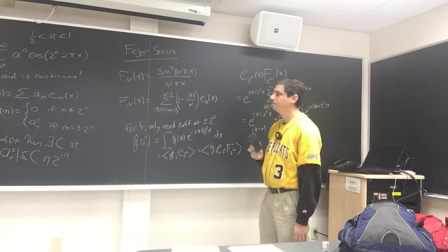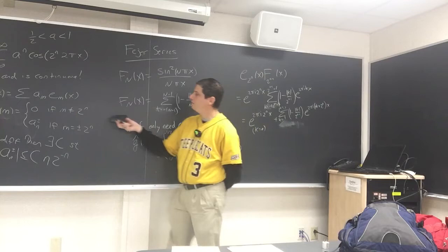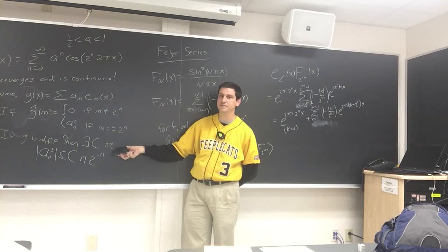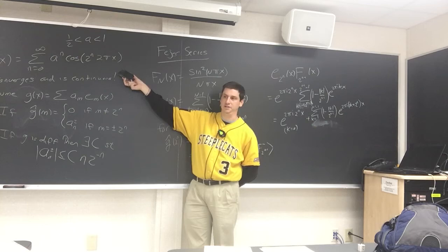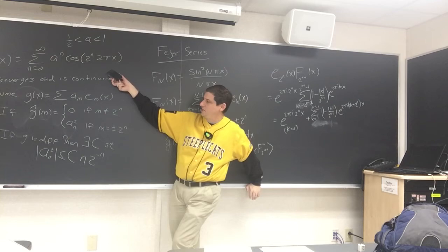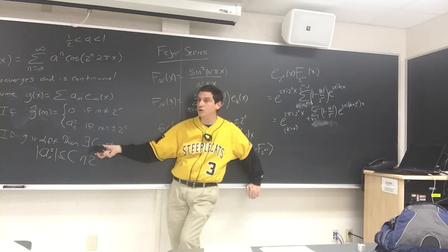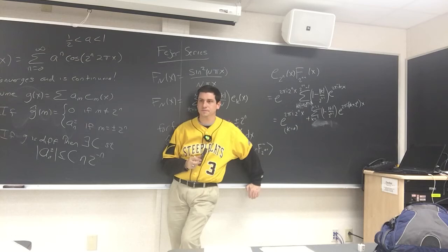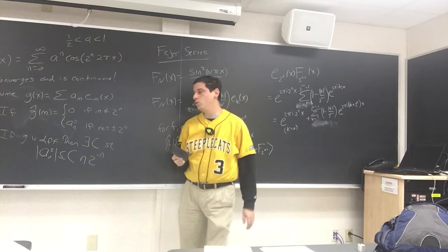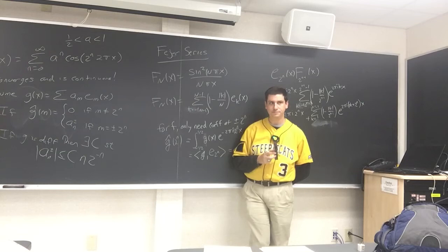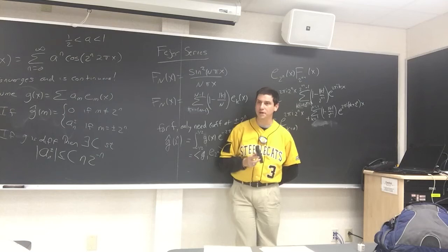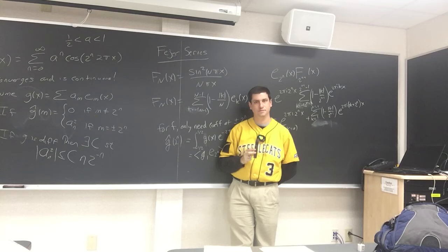You might ask: haven't we shown yet that g has coefficients only at powers of 2? Yes — we're working with a general function g that only has coefficients at ±2^n. If that's true, then those coefficients must have this decay rate, and since our a is too large, we get a contradiction immediately. We've reduced the problem to showing that if a function's Fourier coefficients only live at powers of 2 and the function is differentiable, then the coefficients can't be too large — but our coefficients here are too large.